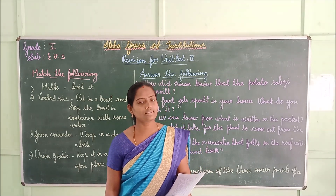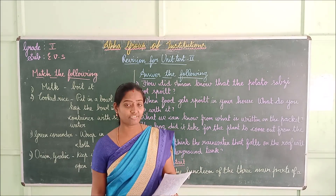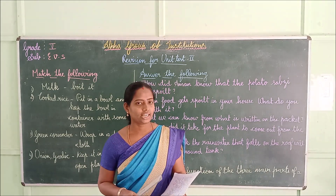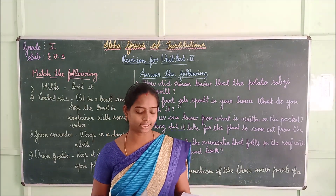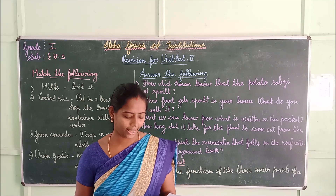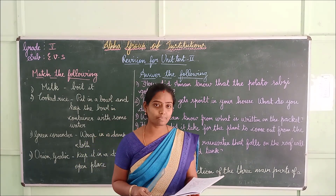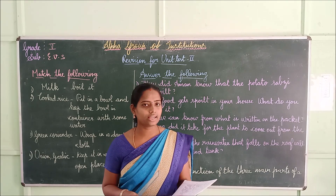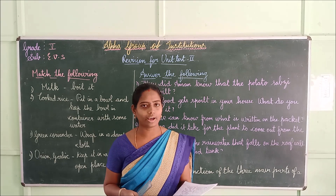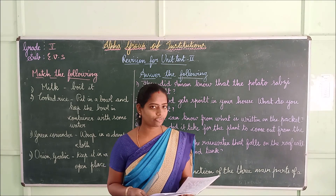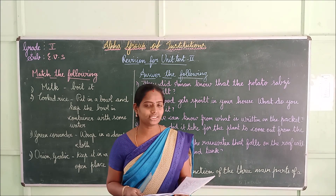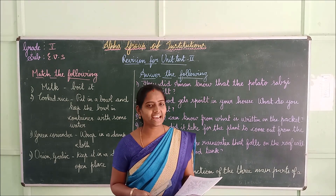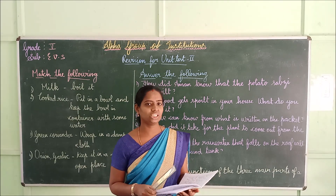Now let's discuss some more fill in the blanks. First one: the spoiled food smells bad and shows unusual colours — C-O-L-O-U-R-S. Second one: most of the raw vegetables get spoiled in one week — W-E-E-K. Third one: ripe mangoes contain more juice and less fibres — J-U-I-C-E.